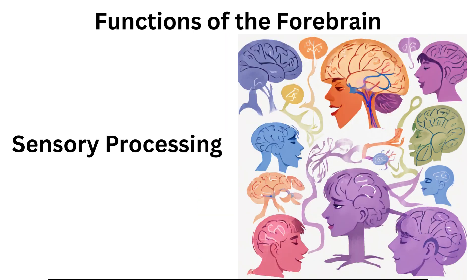Sensory information from the environment — e.g., vision, hearing, touch — is initially processed in the forebrain. Different areas of the cortex are specialized for different sensory modalities.